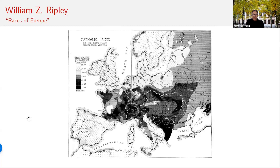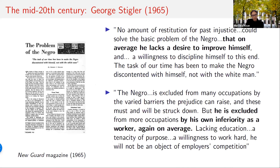Eugenics and race science became associated with Nazism and lost popularity following World War II. Moving into the mid-20th century, economics began to embrace preferences as the cause for differences. In the midst of the Civil Rights Movement, George Stigler, president of the AEA in 1964, penned an article in 1965 contending that while Black Americans had indeed suffered prejudice, this was not the principal cause of their disadvantage. Rather, 'no amount of restitution for past injustice could solve the basic problem of the Negro,' in that, on average, 'he lacks the desire to improve himself and a willingness to discipline.'